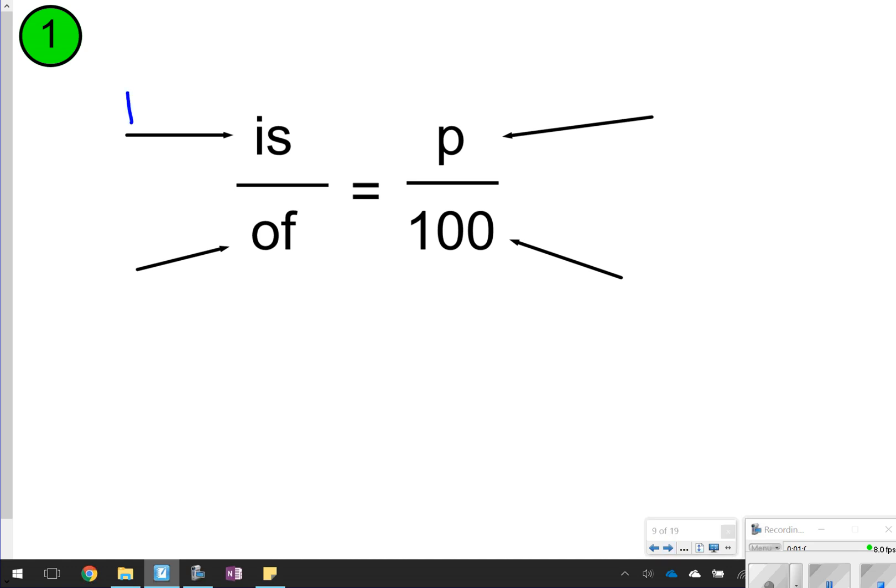So 'is' is still going to represent the part. 'Of' will still represent the whole. P will represent the percent. And you will always keep the 100 in the bottom right-hand corner because percents are out of 100.